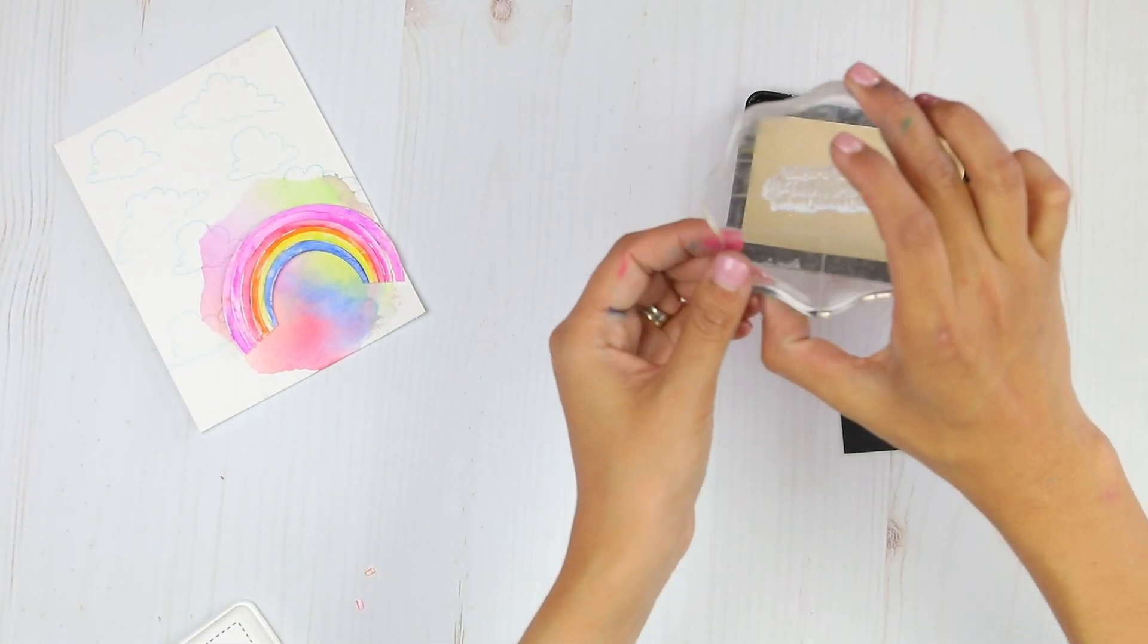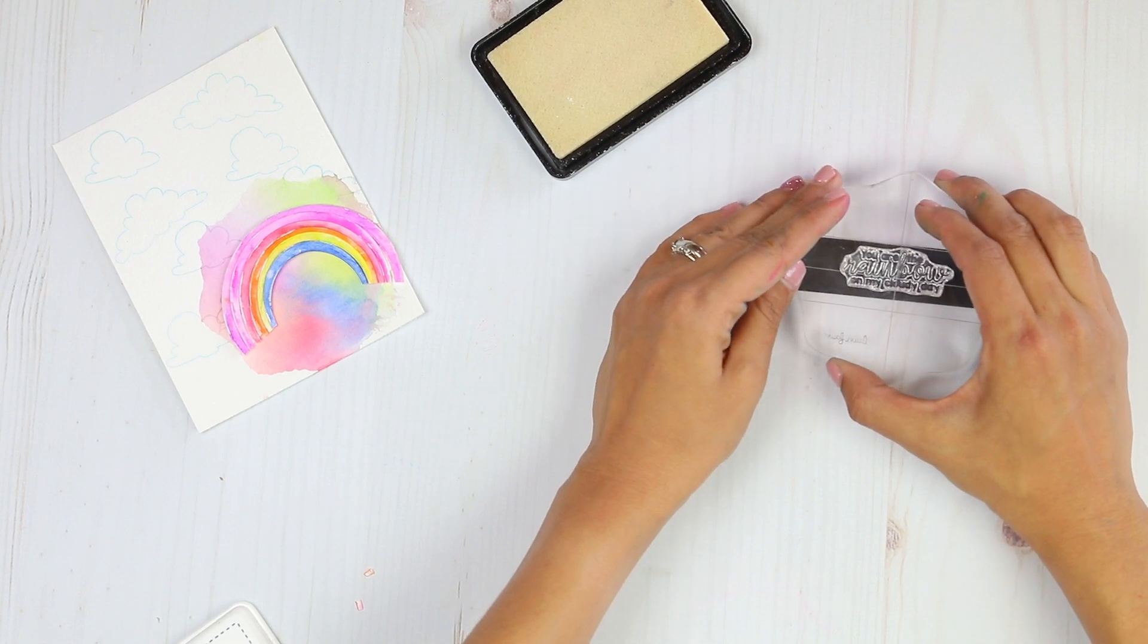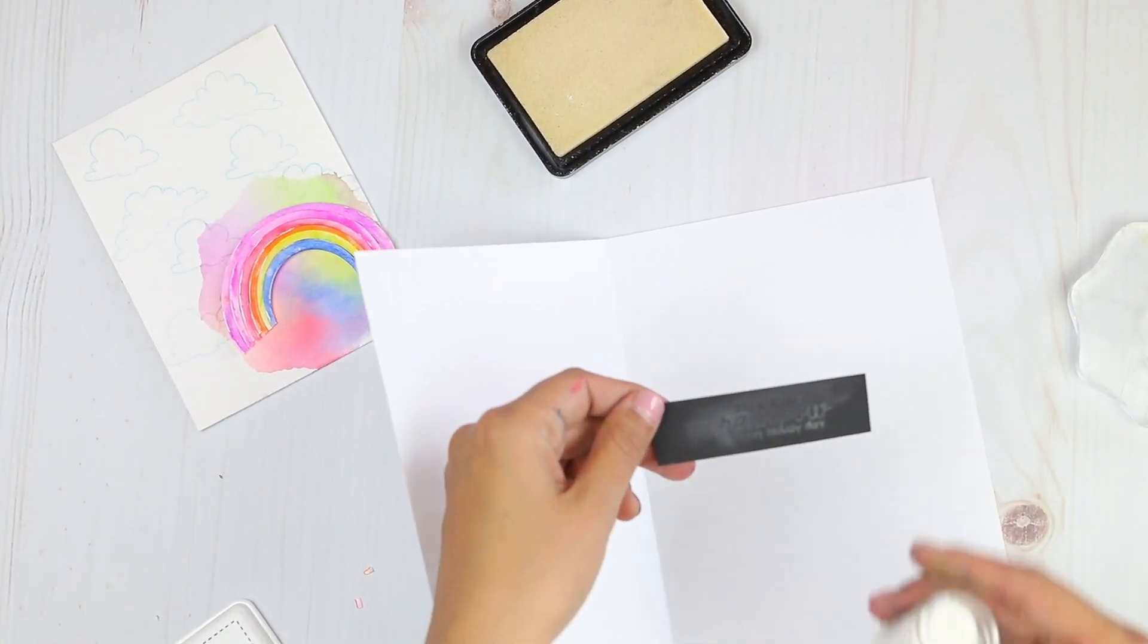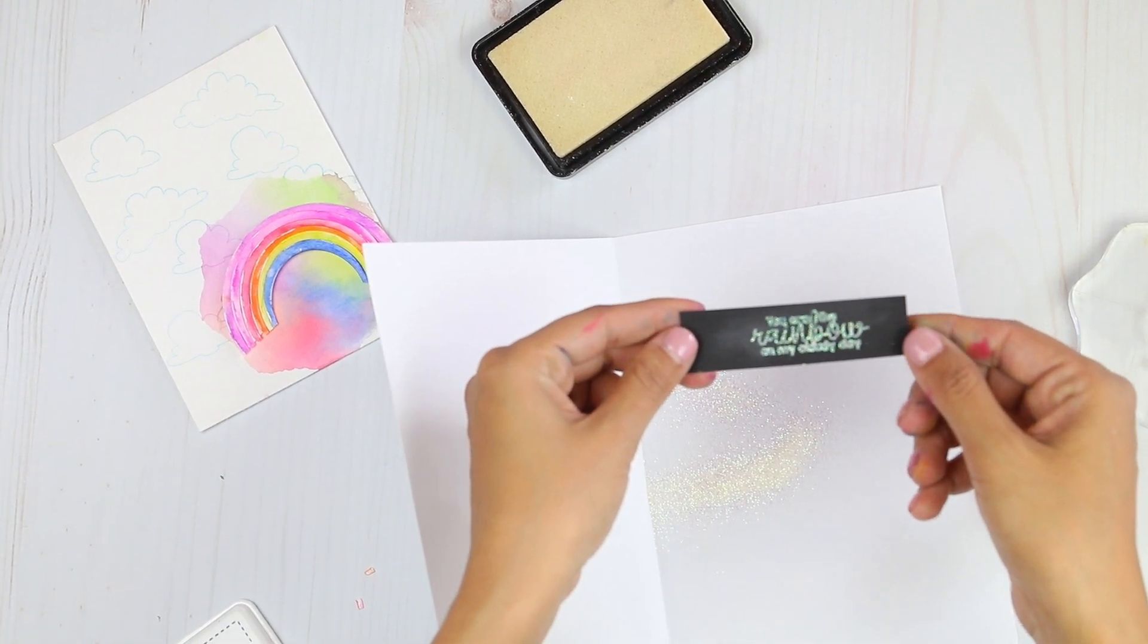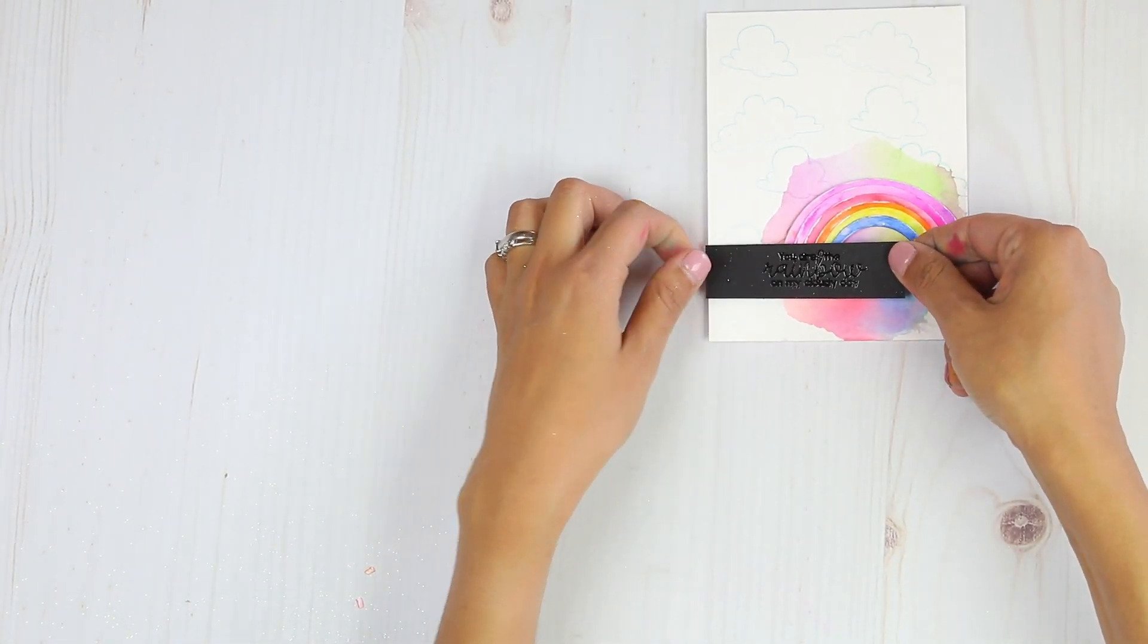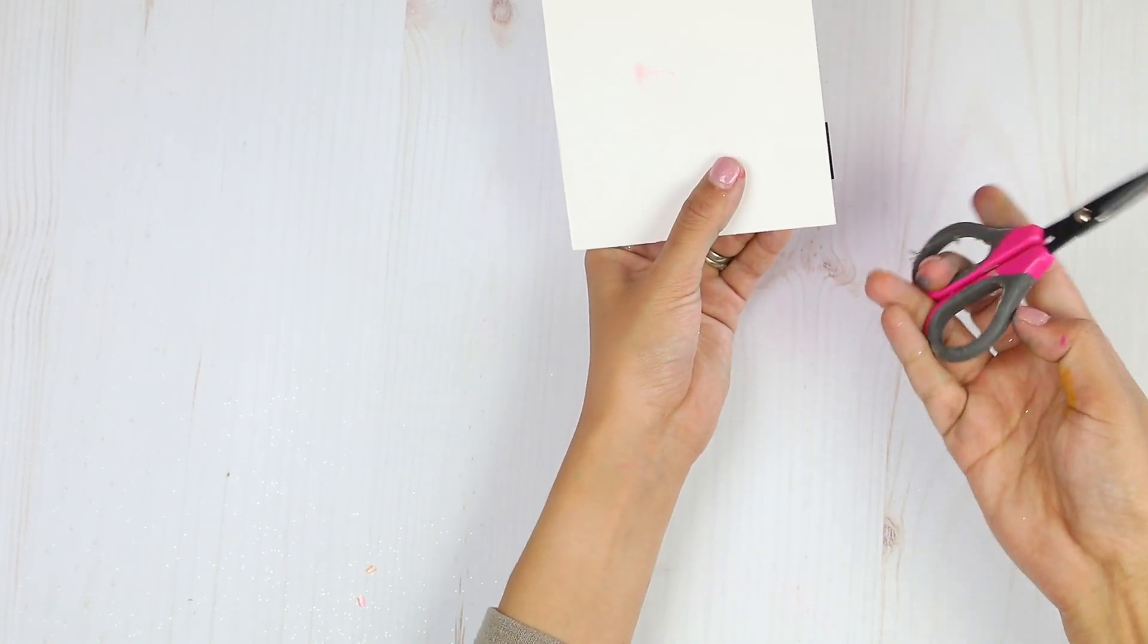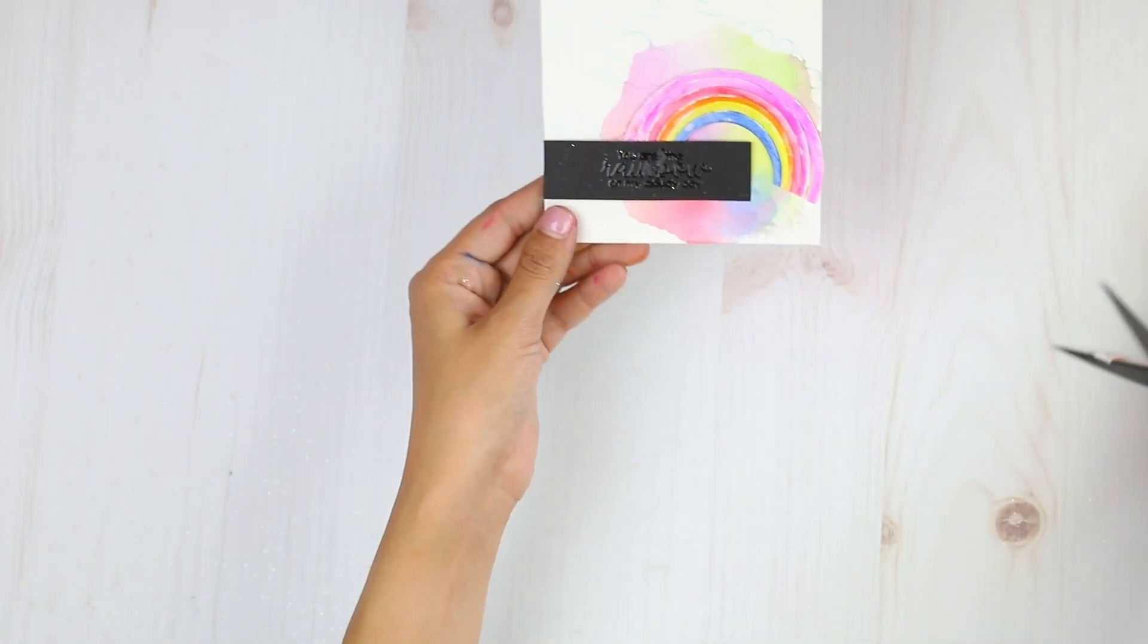And now we're going to move on to our sentiment. All right. We have the You Are the Rainbow on My Cloudy Day. And we're going to place it on this piece of black cardstock. And then we're going to embellish it with Wow Embossing Puffy Glitter Twinkle. This is a white puff. And it's going to be iridescent and white. And we're going to run this through our heat machine. All right guys. That is a little glittery clear. We're going to bring back our card base. And then we're going to place it right down here. We're going to try to line up that edge. And if it doesn't work, you can just add it and then flip it around and trim any excess of your sentiment.